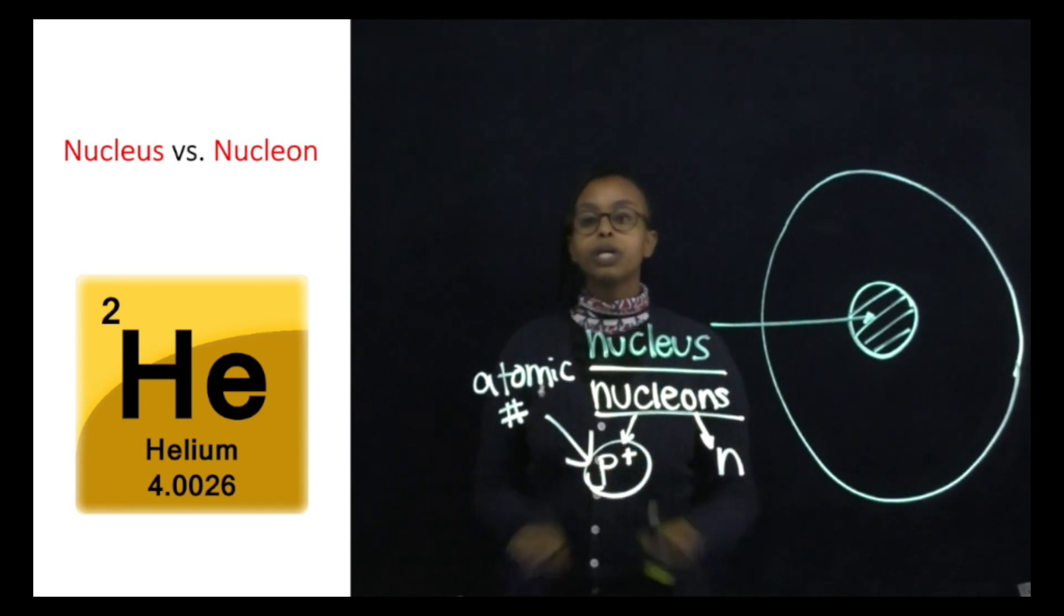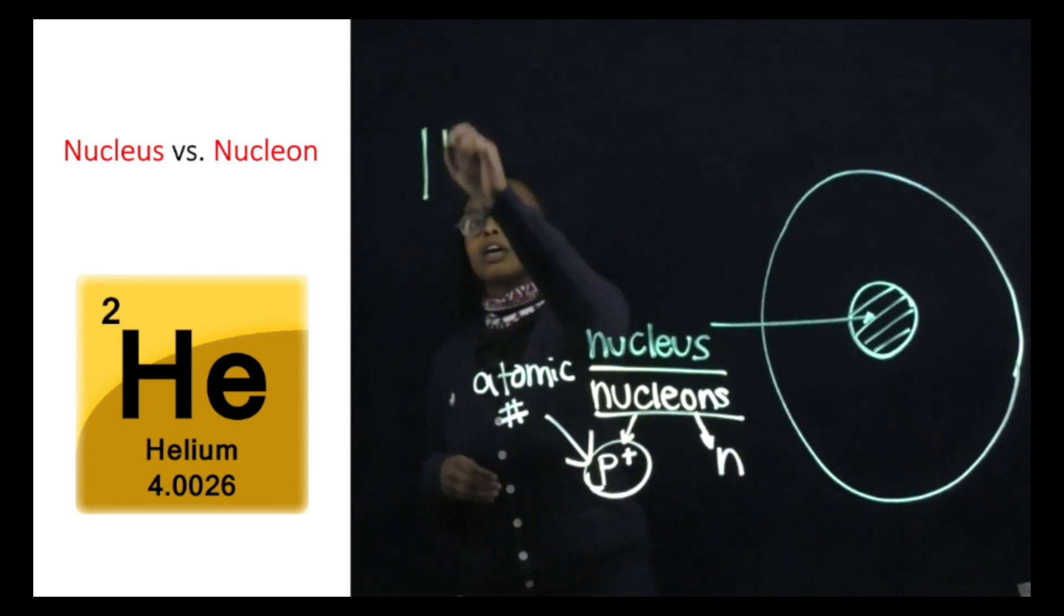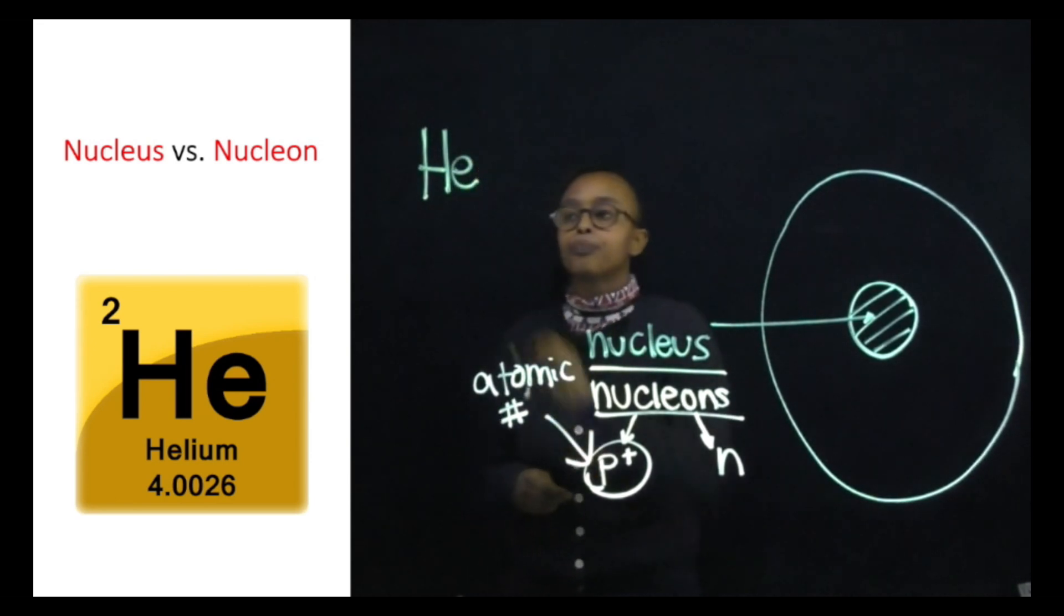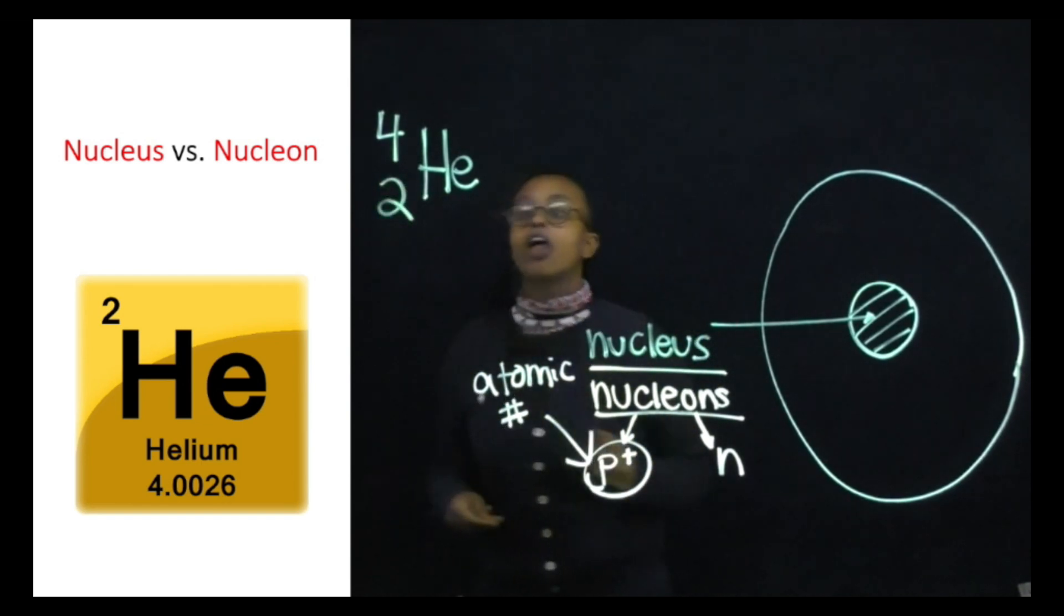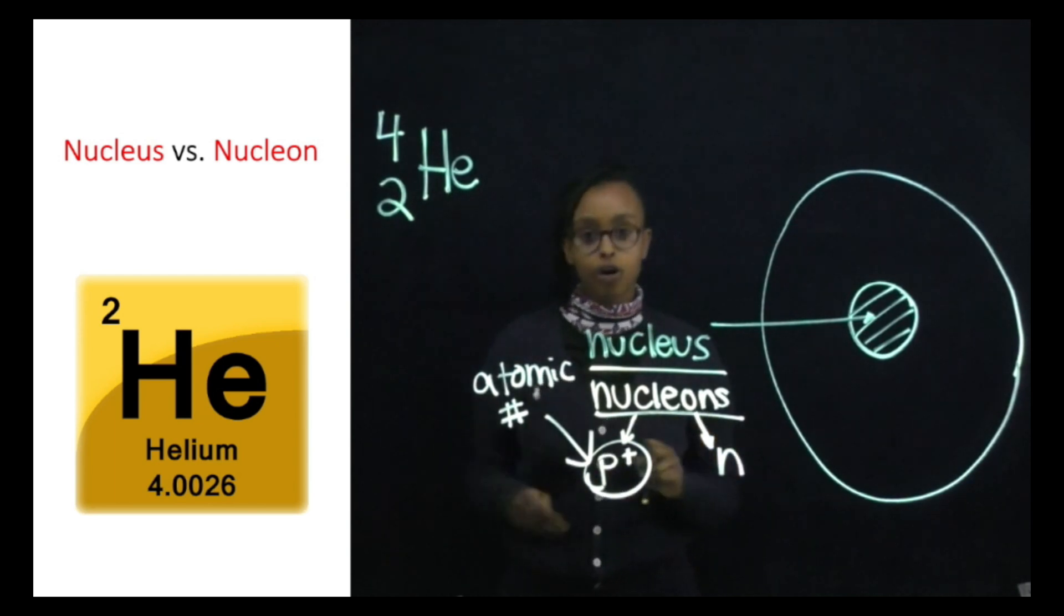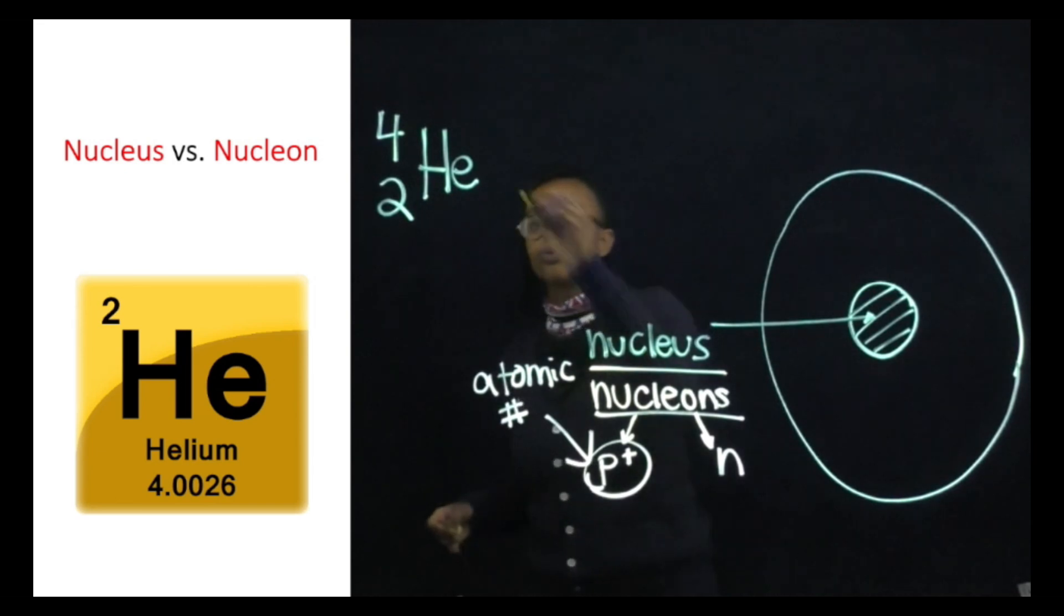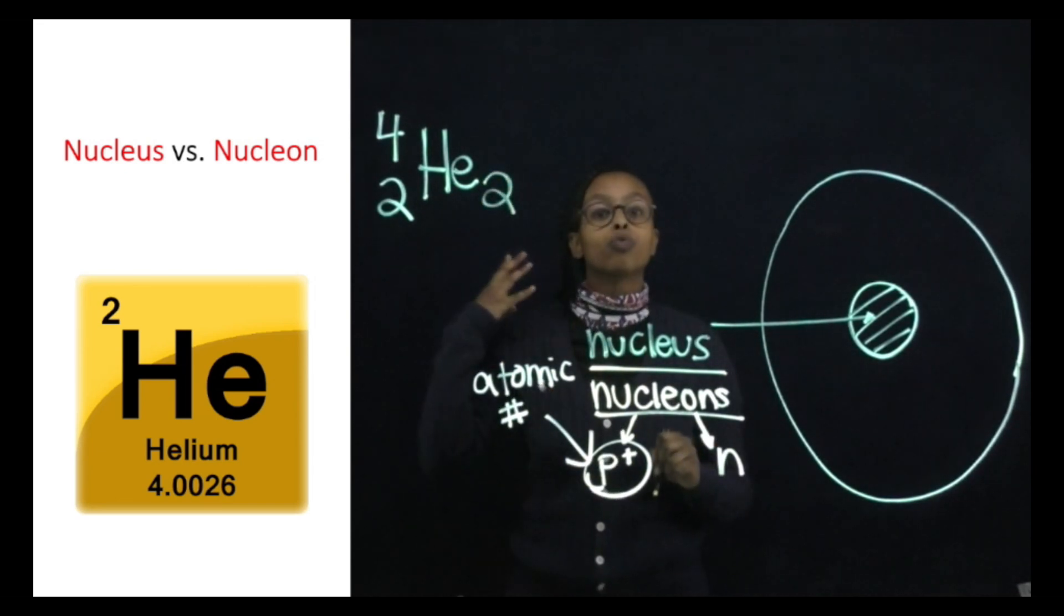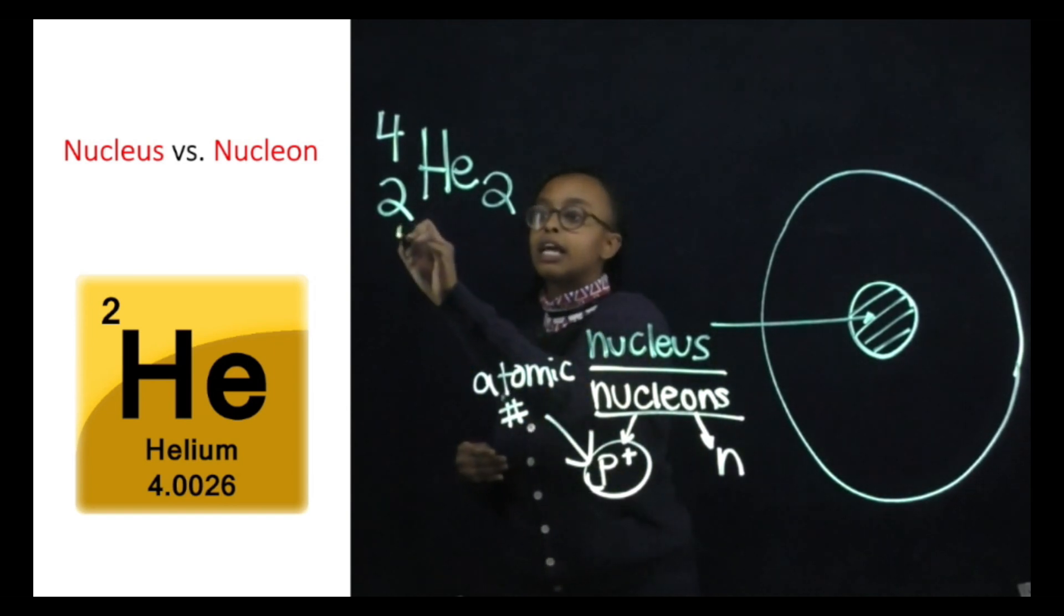So if we were to write this in standard nuclear notation, it would essentially be our atomic mass on the top, which is the sum of both our protons and neutrons. The number to the left on the bottom would be the number of protons. And then subtracting those two would give us the number on the bottom right, which is the number of neutrons. This is how to write it in standard nuclear notation.